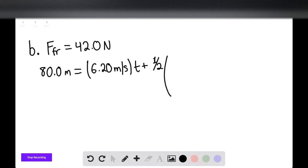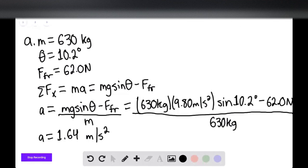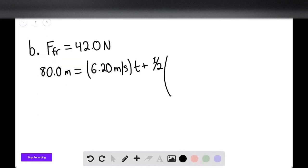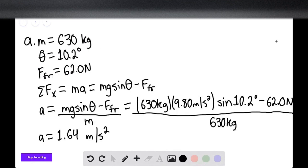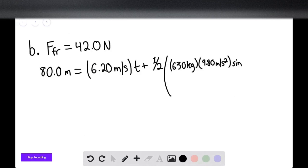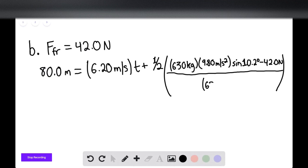We already found it: mg sine of theta minus force of friction over the mass. So here it'll be 630 kilograms multiplied by 9.80 meters per second squared times sine of the angle 10.2 degrees minus 42.0 newtons. This would all be divided by 630 kilograms. And then this entire thing would, of course, be multiplied by t squared.